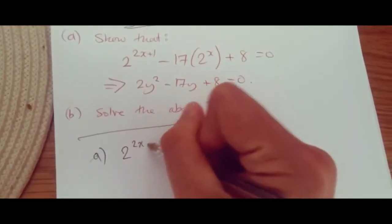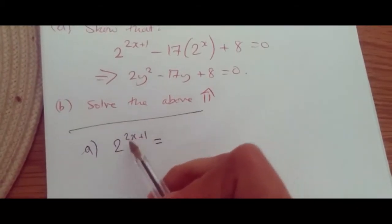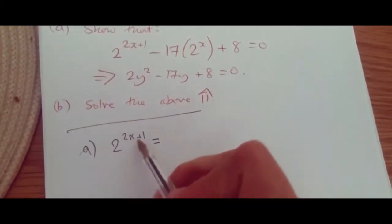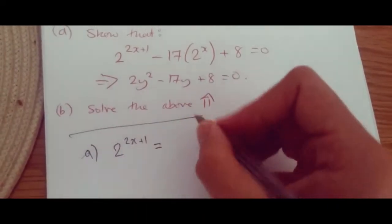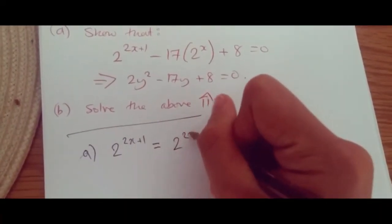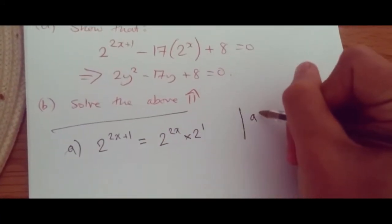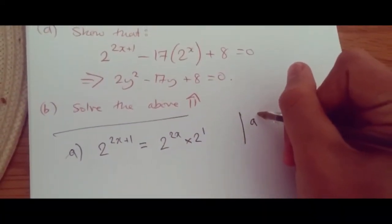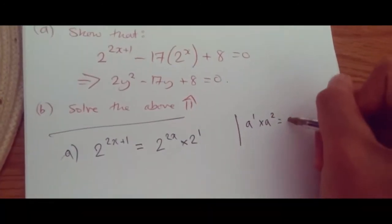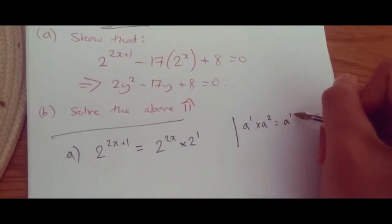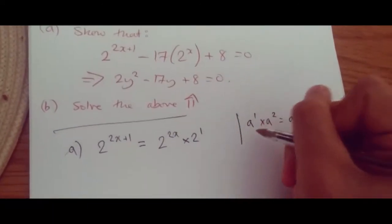From 2 to the power of 2x+1, this can be rewritten as the multiplication of two powers — two numbers with the same base. So this is the same as 2 to the power of 2x times 2 to the power of 1. Because if you remember, a to the power of 1 times a to the power of 2 equals a to the power of 1 plus 2, i.e. a to the 3. It's just a simple case, isn't it?